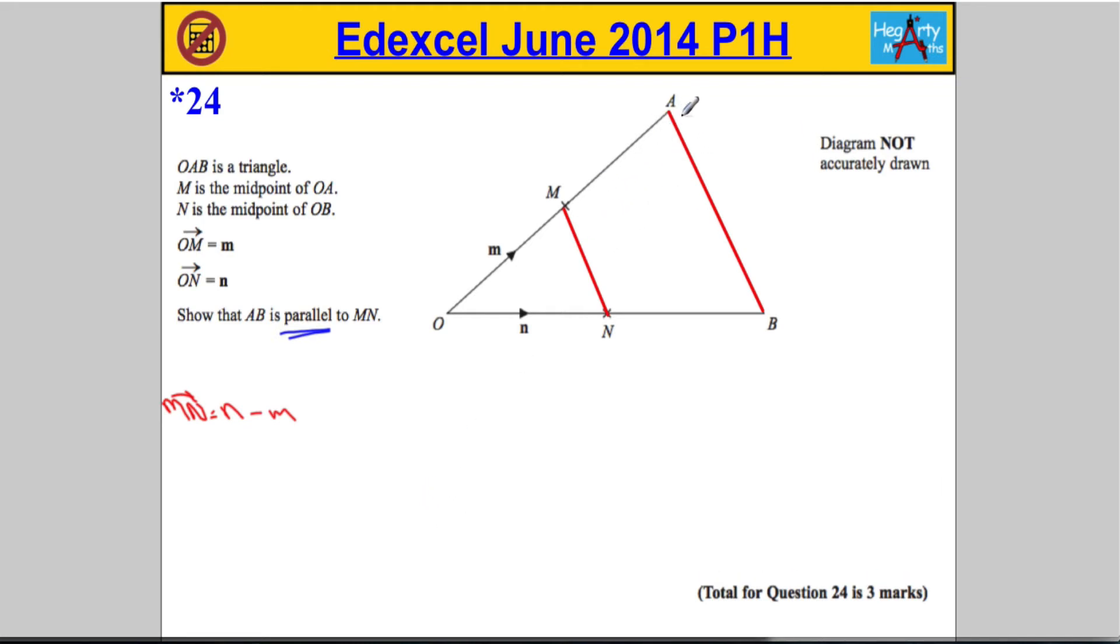Now, what about the vector from A to B? Well, I would have to go all the way along here and then all the way along here. Now if M here, if this is the midpoint of OA, well then this vector here must also be m.